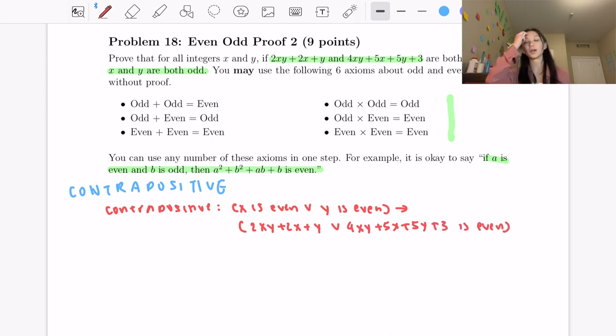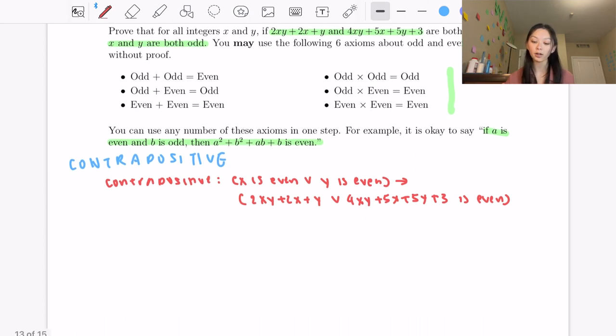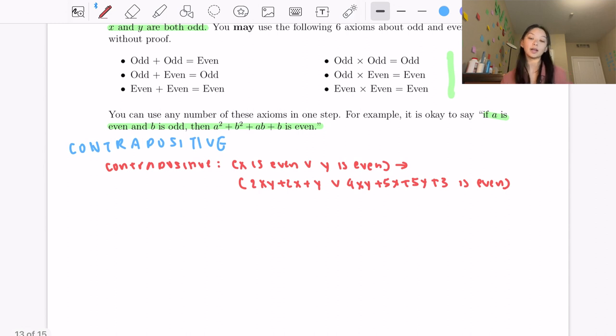So from this we might notice that we might want to pursue proof by cases, because we just have to prove for all cases where either x is even or y is even, one of these is true. So first let's go over our first case.